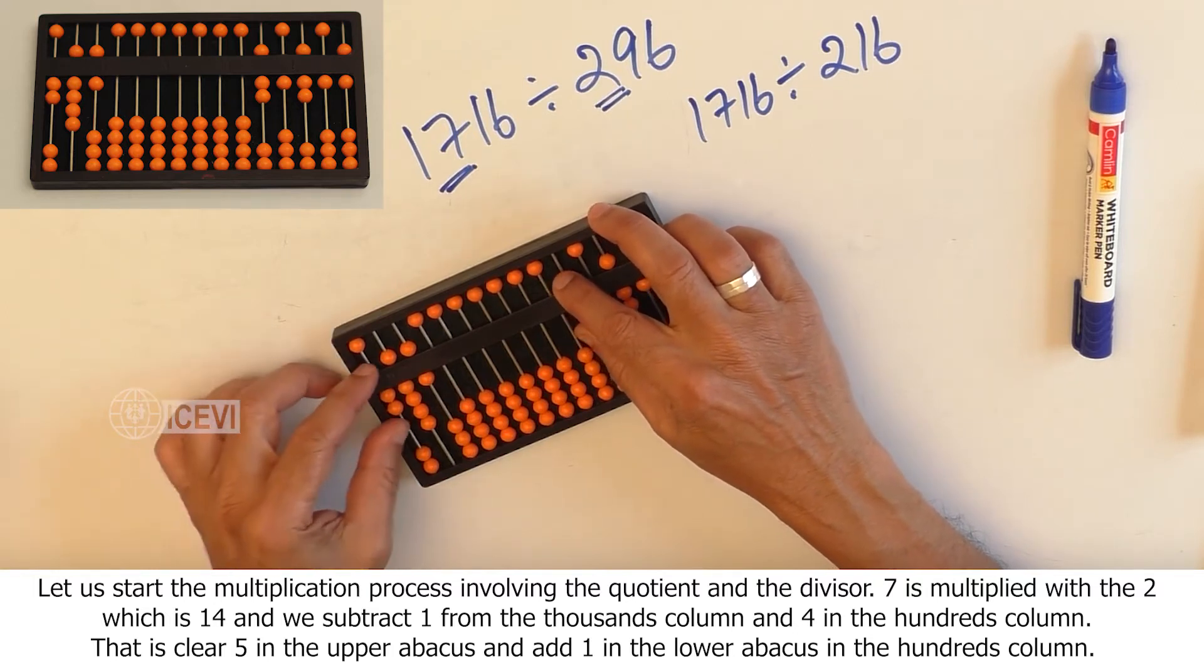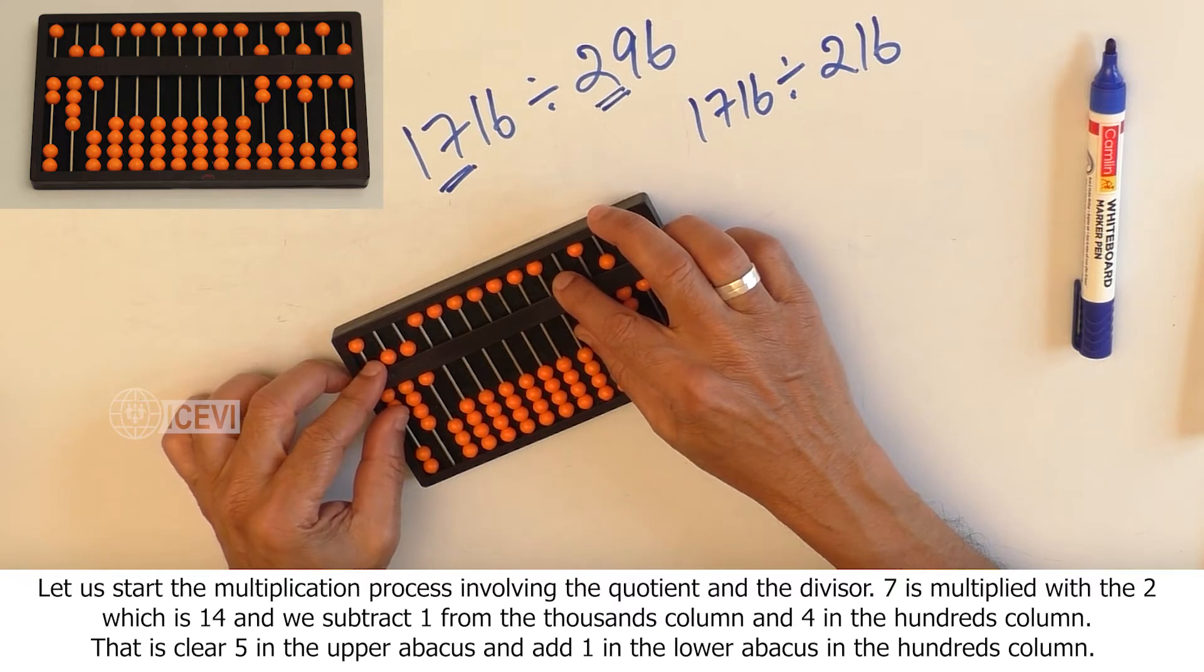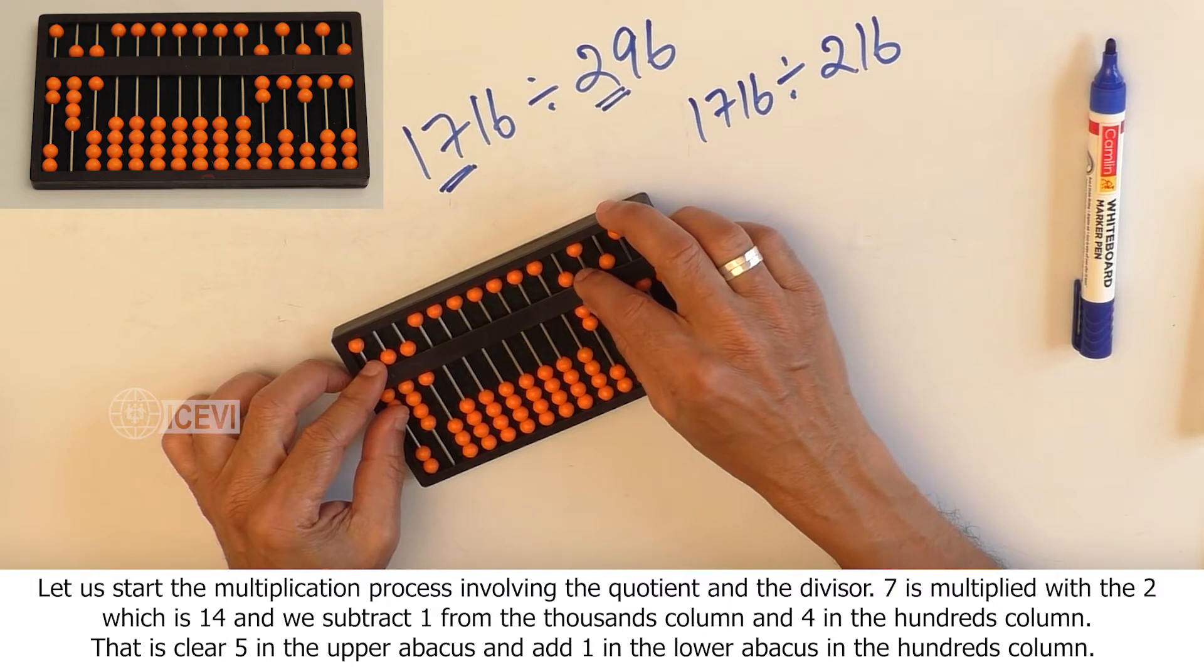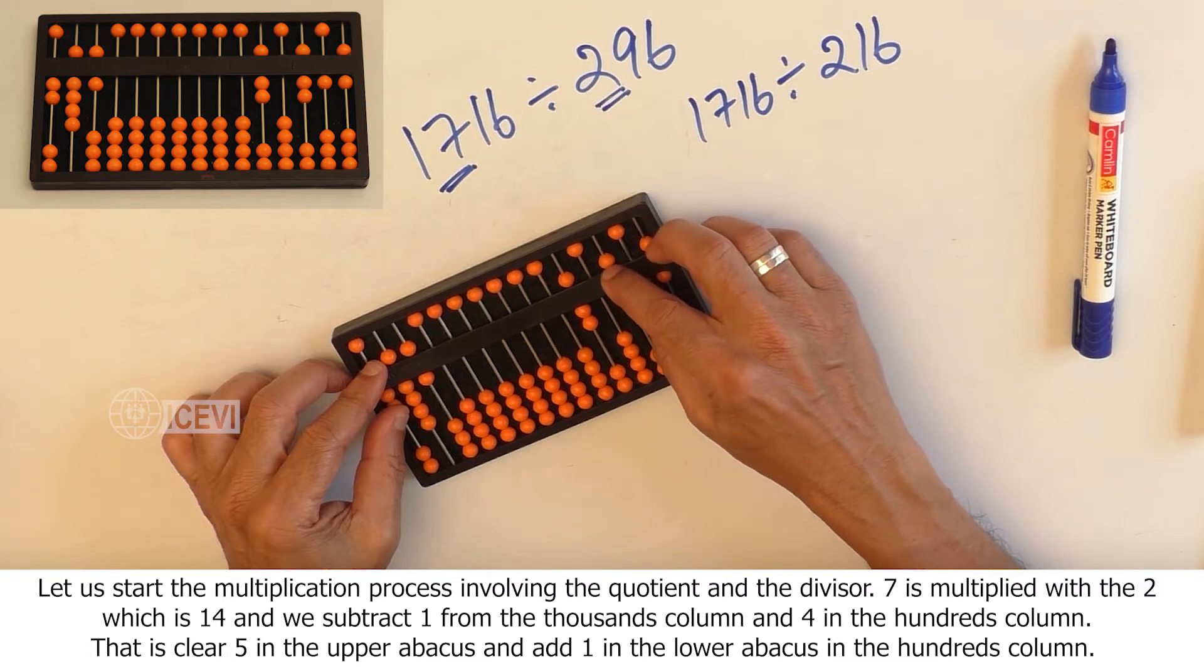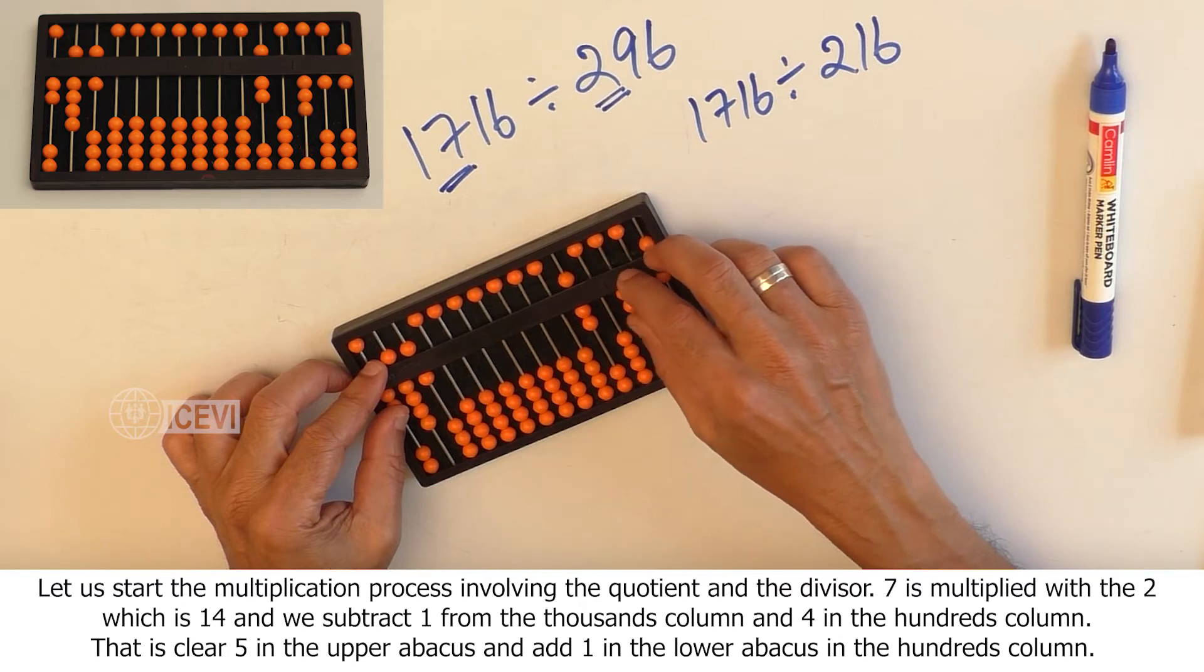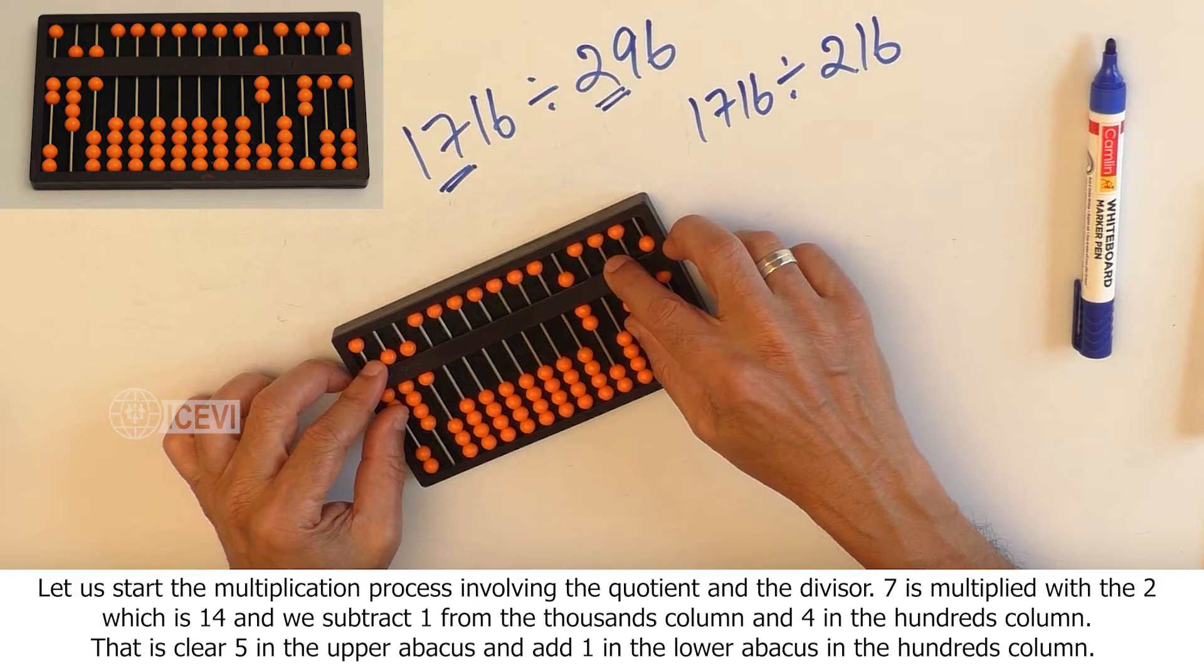7 is multiplied with 2, which is 14, and we subtract 1 from the thousands column and 4 in the hundreds column. That is, clear 5 in the upper abacus and add 1 in the lower abacus, in the hundreds column.